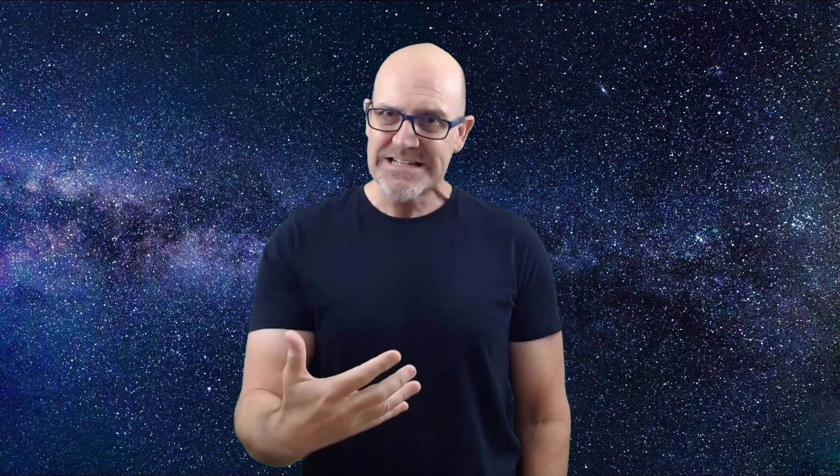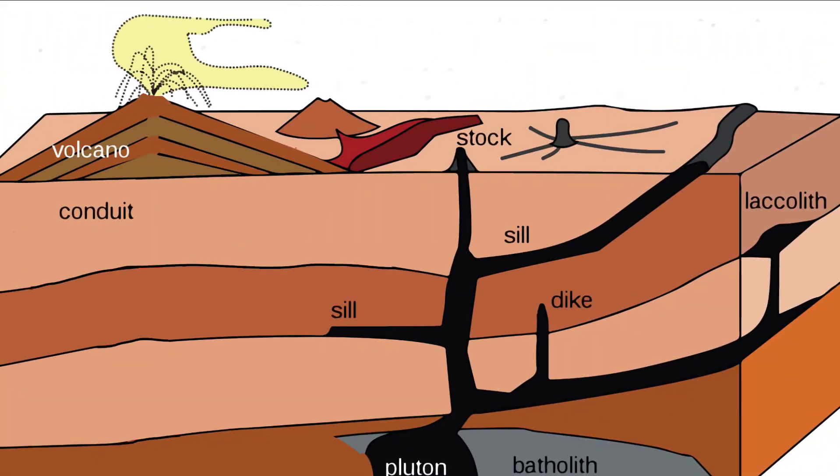Ok, let's look at extrusive igneous rocks. This is easy to remember because of the word 'ex' at the beginning of the word. 'Ex' reminds us of exited or exited the earth. So sometimes instead of crystallizing inside the earth, like the intrusive igneous rocks, molten magma will make its way all the way to the surface and creates what we call volcanoes.